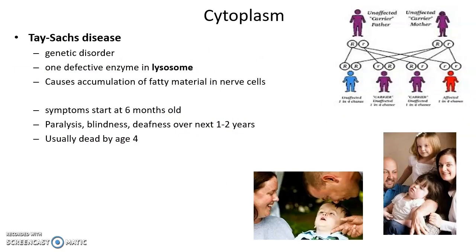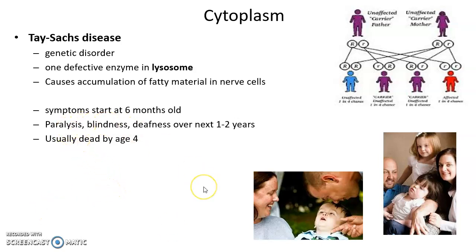There is a genetic disorder called Tay-Sachs disease related to lysosomes. One enzyme stored in lysosomes is defective and does not work properly. Because of that, there is an accumulation of fatty material in the nerve cells of affected children. Symptoms start when the infant is six months old, leading to paralysis, blindness, and deafness, getting progressively worse until the child dies, usually around age four. Tay-Sachs disease is a genetic disorder associated with a defective digestive enzyme in lysosomes.